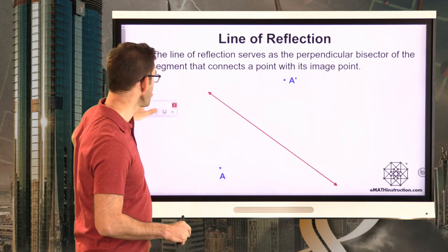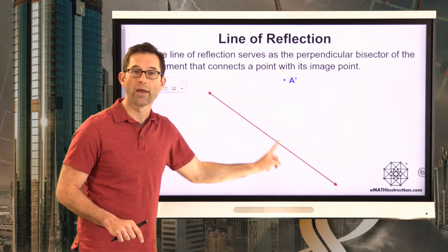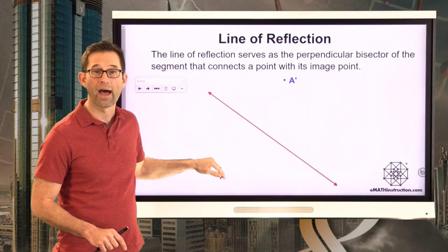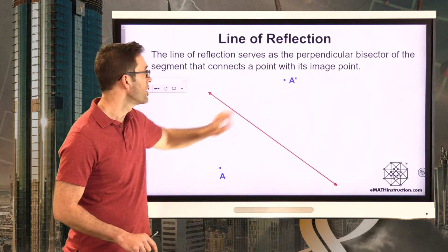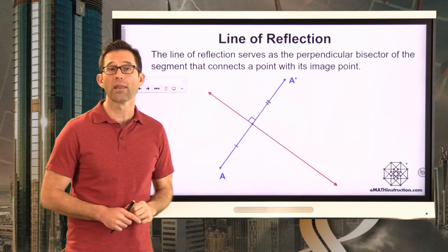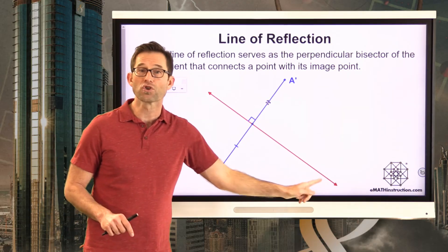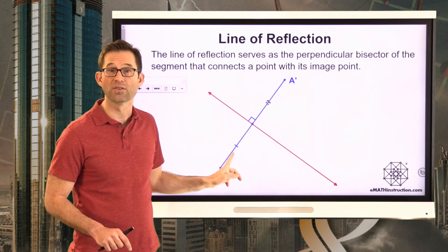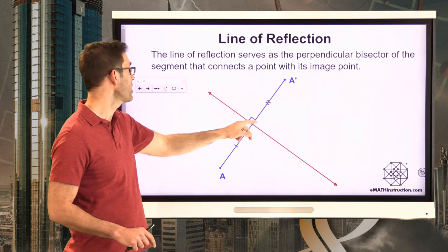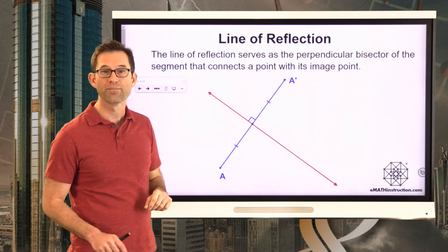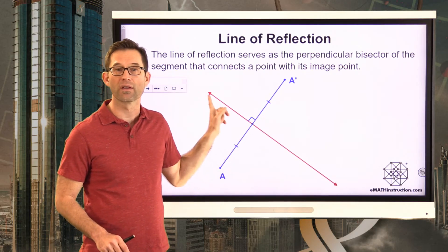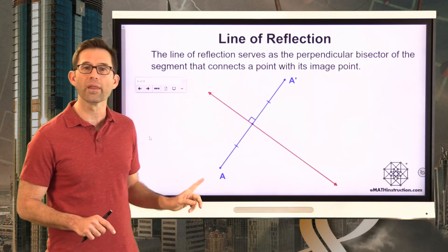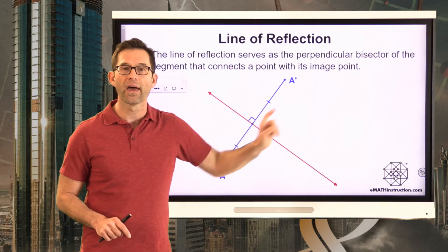The line of reflection serves as the perpendicular bisector of the segment that connects a point with its image point. It cuts that segment into two equal lengths and is perpendicular to it. These are important facts about how the line of reflection relates to a point and its image.